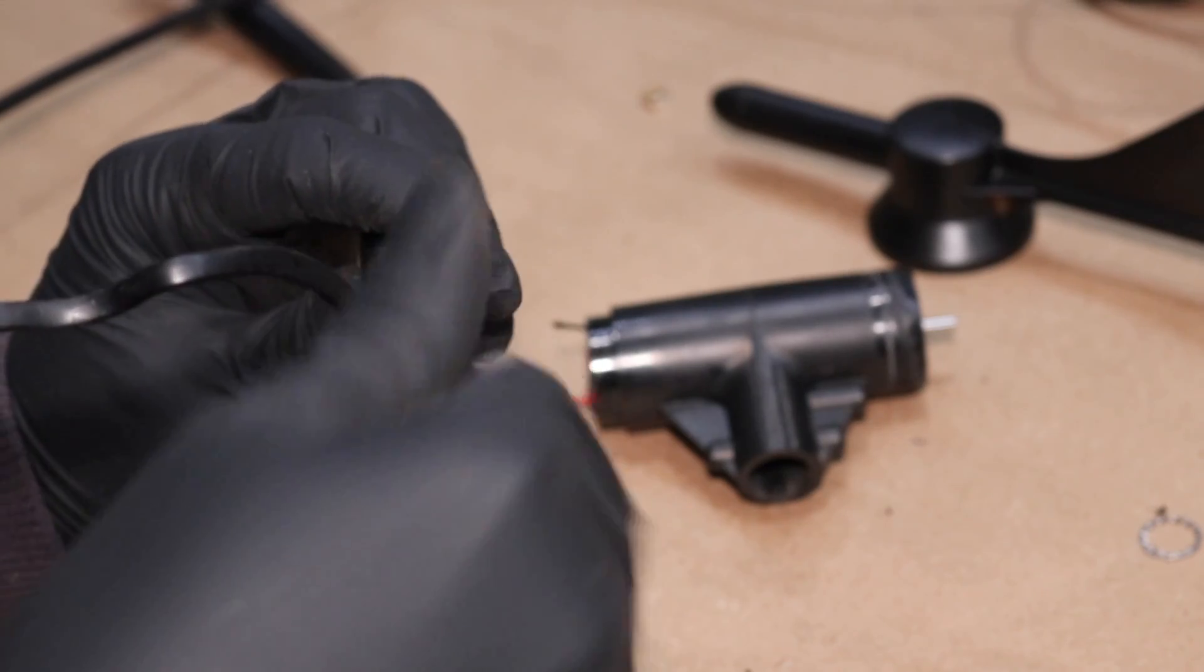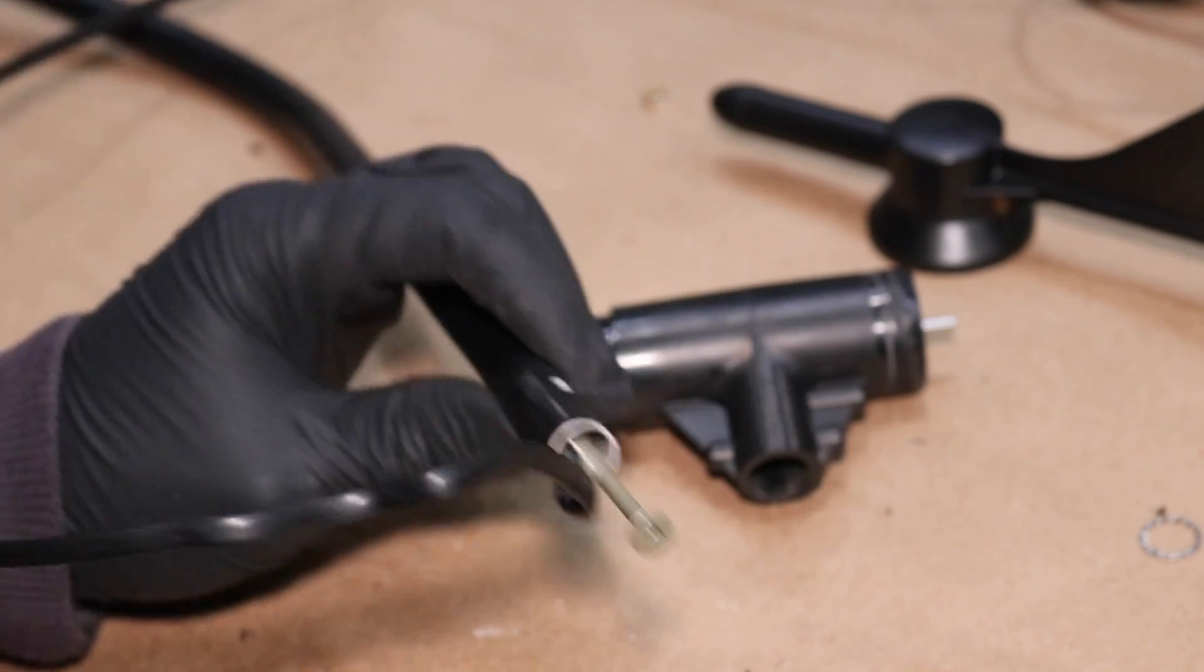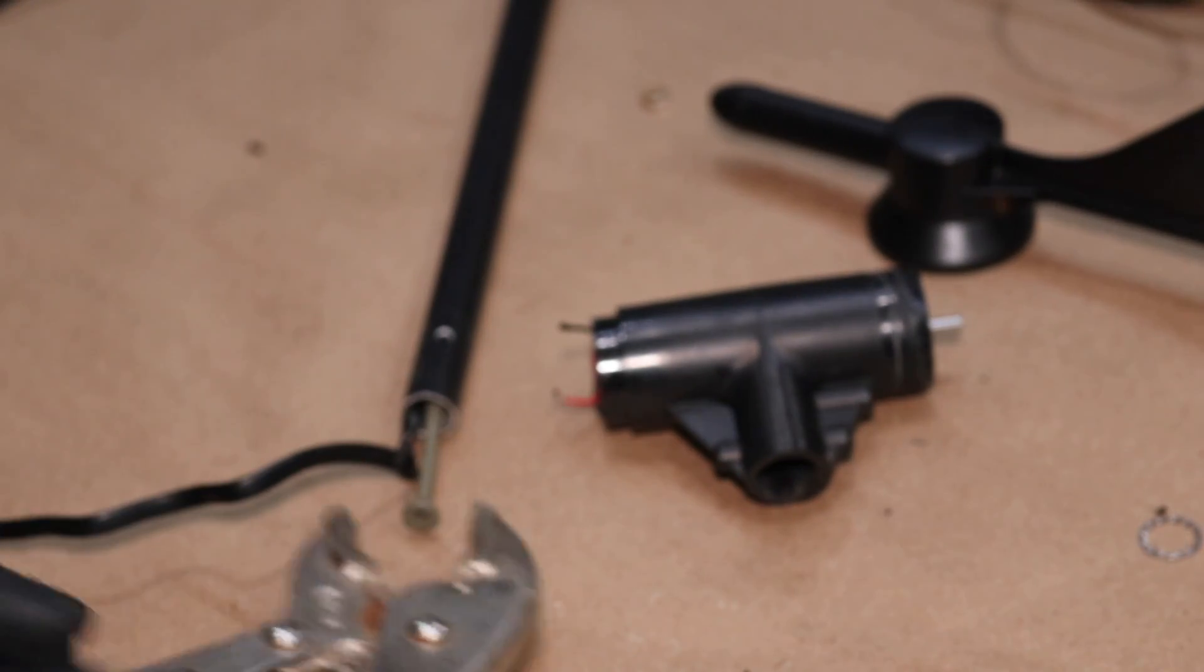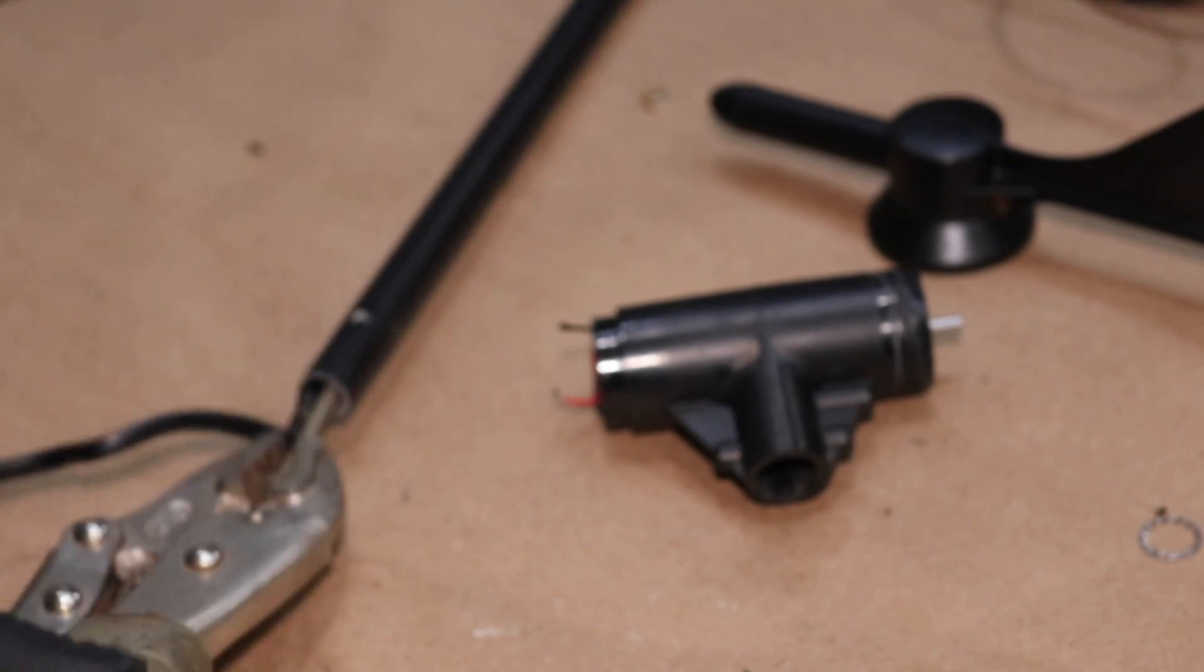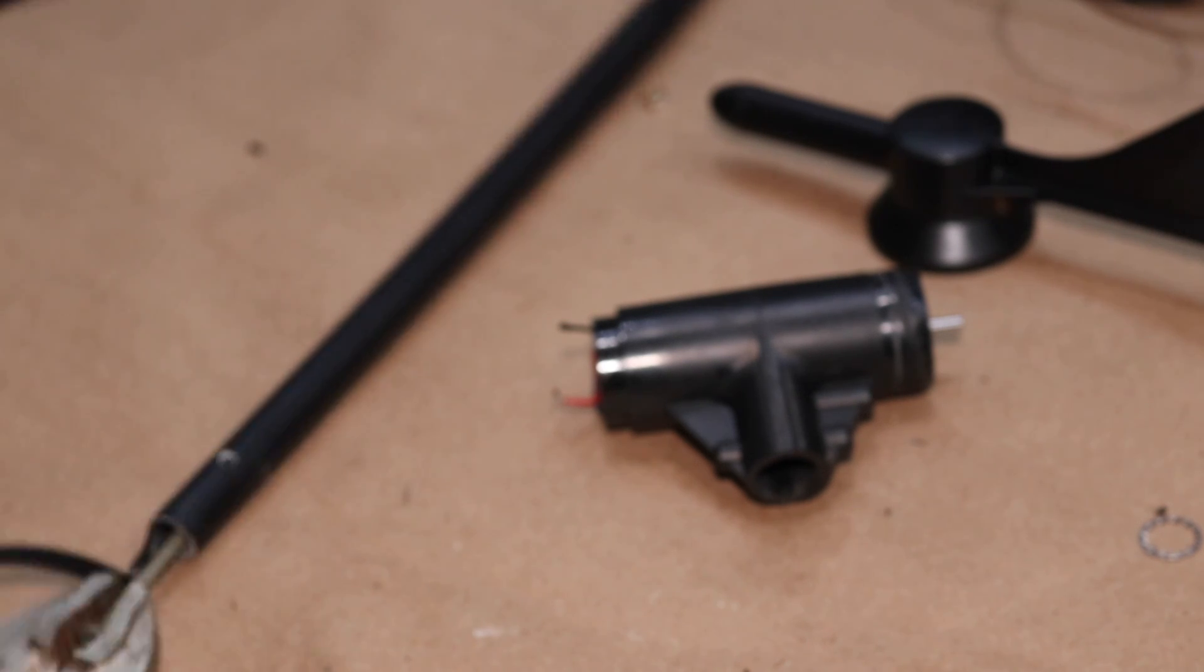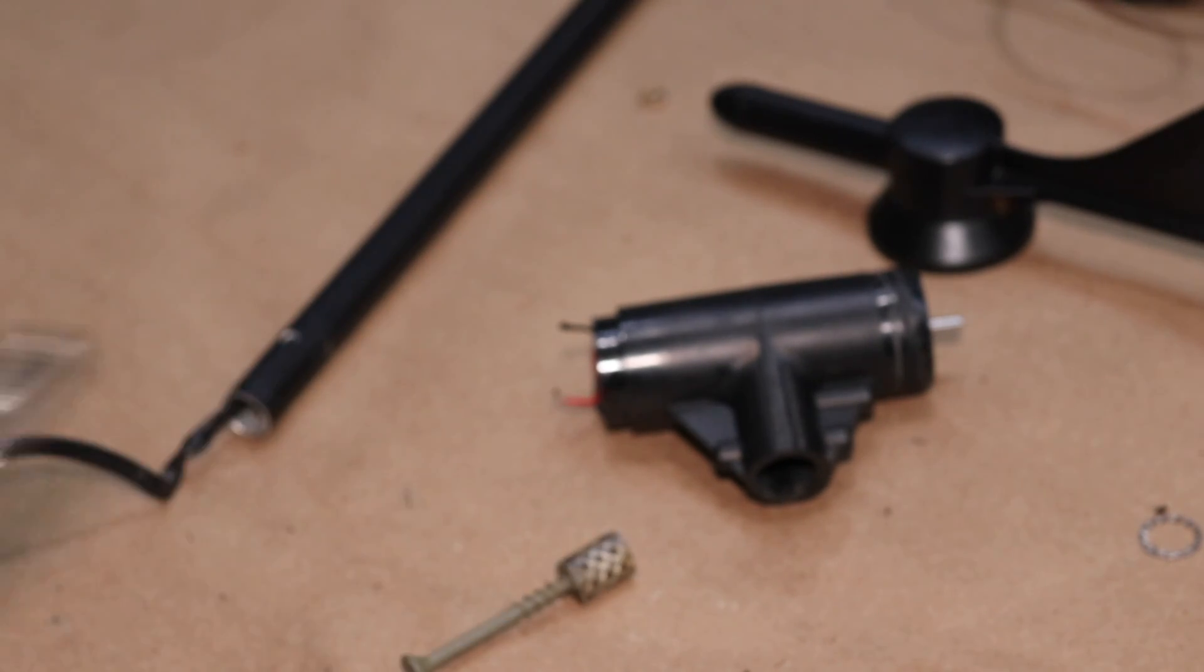See that little bit of air tube in there? Put it in there a little bit. I don't know. I guess we'll try the channel locks again, right? Might as well. Oh, that came right out. Easy peasy. That's the way to do it.